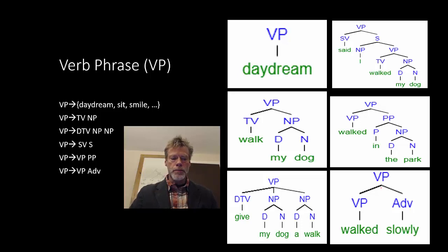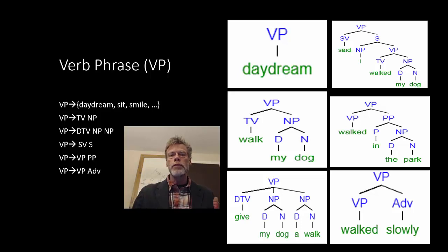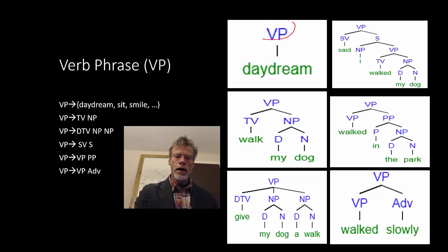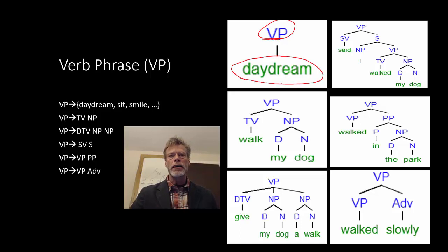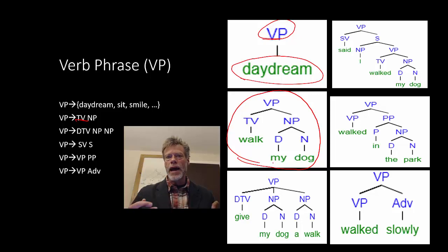We also have verb phrases. Intransitive verbs like daydream, sit, or smile are verbs that don't need anything to combine with them — they don't need an object or anything else to complement them. They are complete in and of themselves and act as verb phrases by themselves. So the mother is the verb phrase and the daughter is just the verb. You can also get a verb phrase consisting of a transitive verb plus a noun phrase, which gives you a transitive verb plus its noun phrase object.